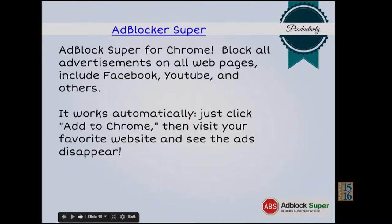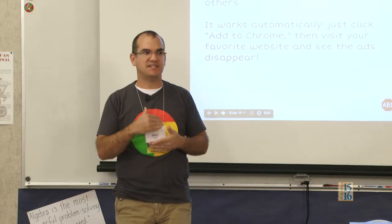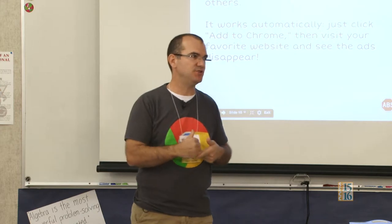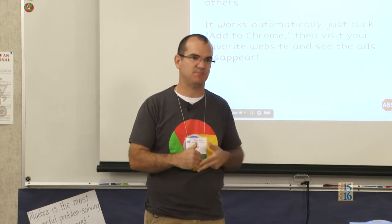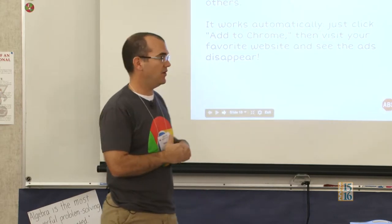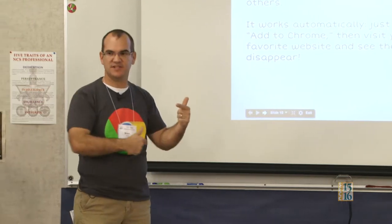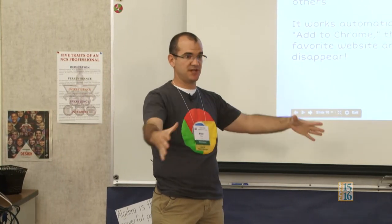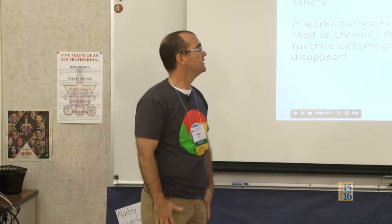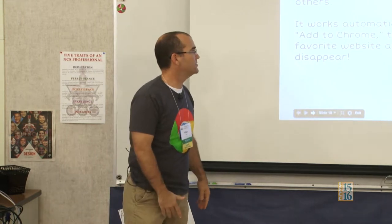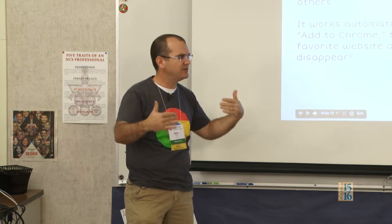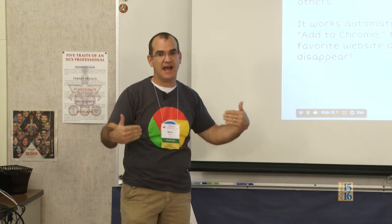Ad Blocker Super is one I love. It doesn't do anything fancy like saving stuff, but it blocks those ads that you get. It blocks ads from YouTube videos and from Facebook and social media. This is Ad Blocker Super and it's going to block all of those ads on those sites. You just add it to Chrome and it's just like a virus blocker — it runs in the background, you don't really have to worry about it.